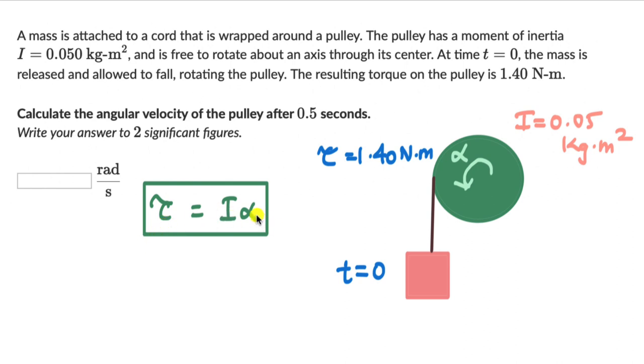We can figure out the angular acceleration, and once we figure out the angular acceleration, we can go to one rotational kinematic equation and then use it to figure out the final angular velocity. Initial angular velocity is already 0, and we already know the time. So if we figure out alpha, our job is done.